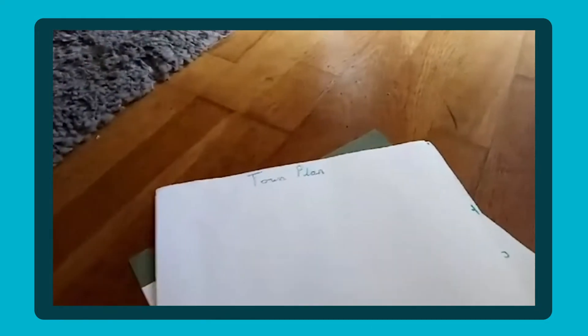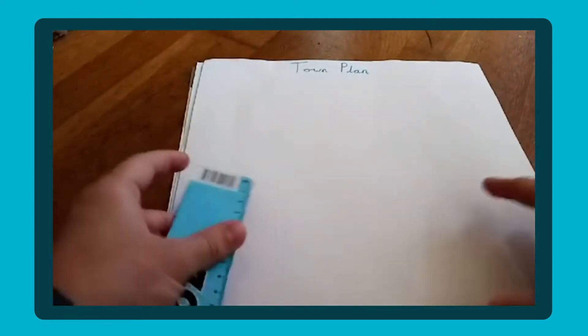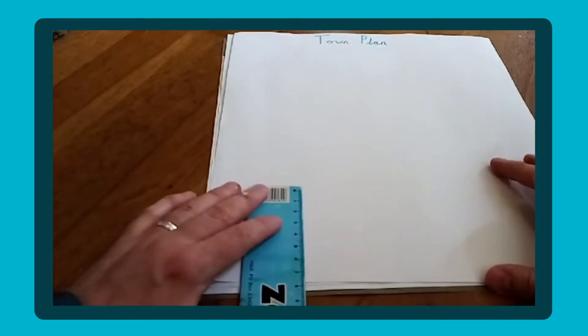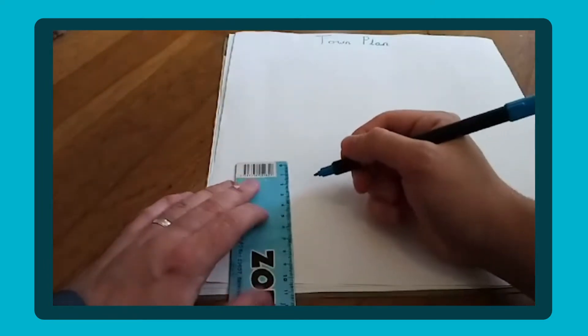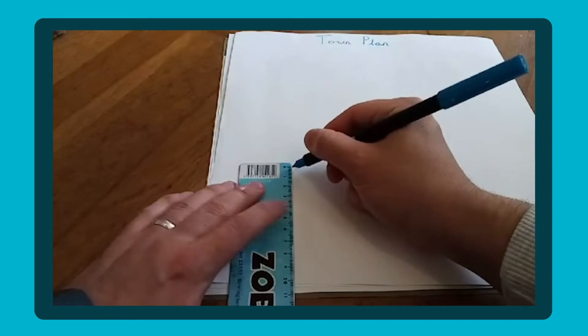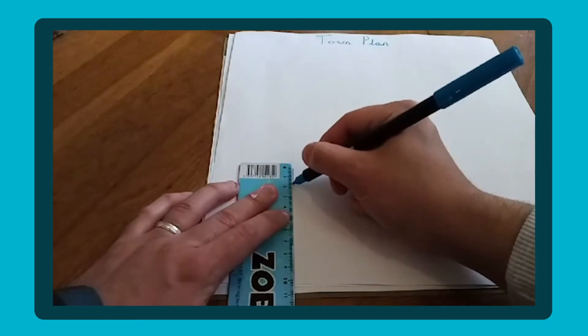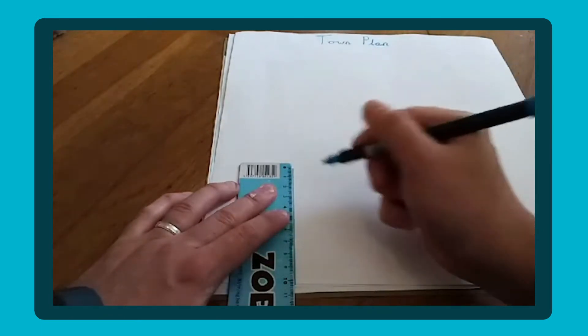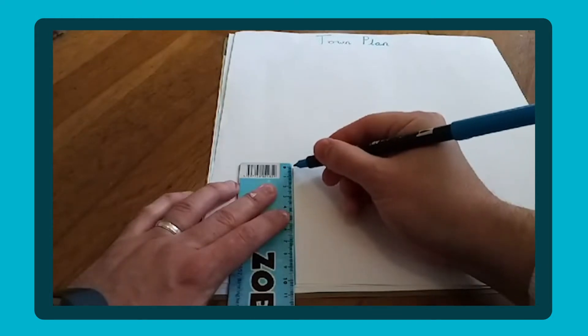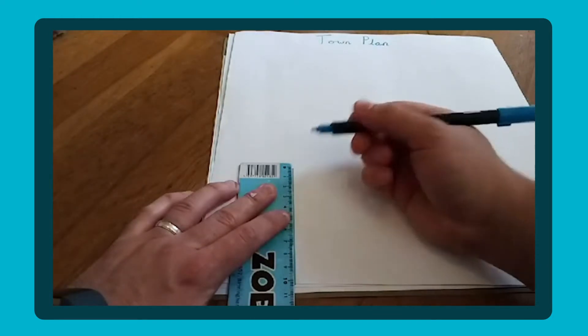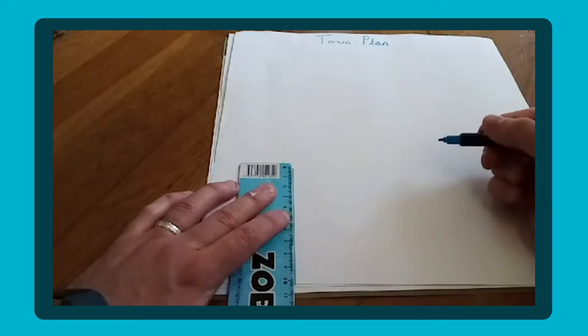If you wanted to do this with older children you could certainly look at doing things like getting the ratios right. So you could look at for every five centimeters on their plan here that might equate to 15 centimeters on their model town. So you start off by making sure that the actual mapping out is done accurately, even just down to getting the actual starting point at the start of the ruler.